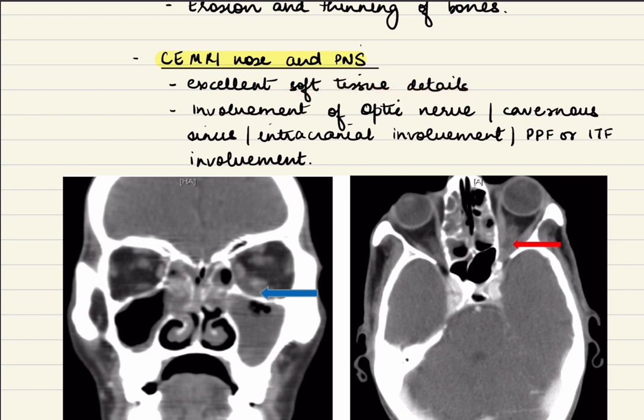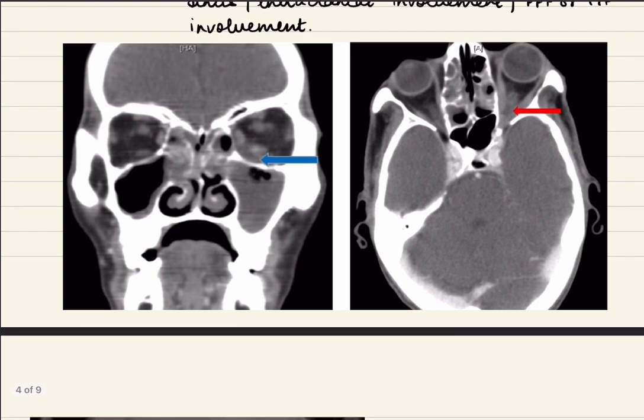We get to know whether there is involvement of the optic nerve, cavernous sinus, intracranial involvement, or if the disease has progressed to the pterygopalatine fossa. As you can see in the CT scan, in the left maxillary sinus there is haziness which has spread to the inferomedial part of the orbit. Similarly, in the axial scan you can see haziness in the orbit near the orbital apex area.